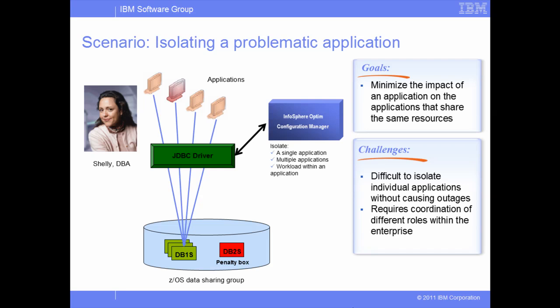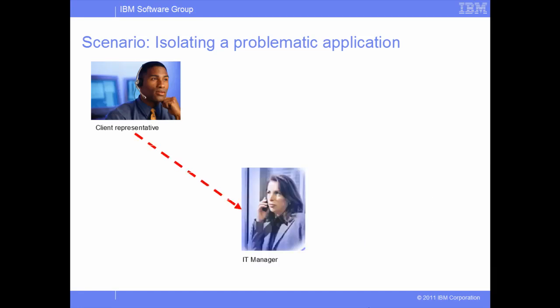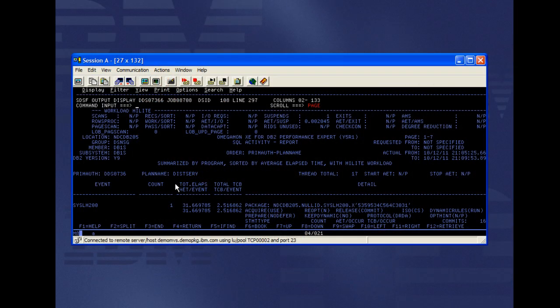Fortunately, Shelly has Infosphere Optim Configuration Manager and can use the product to easily isolate one or more applications, or even a part of an application, because the isolation happens at the transaction level. On a particular day, a client rep complains that the periodic order processing application has consistent performance problems. Shelly is called to investigate, and she logs on to the production system environment to monitor the performance of the application. Shelly uses IBM Tivoli Omegamon for DB2 Performance Expert on ZOS to analyze the SQL Activity Report.